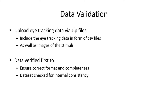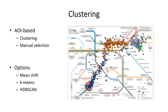Our tool supports the upload of eye-tracking data via ZIP files which contain two components: the recorded eye movement data as well as the stimuli in the form of static images. The data is first checked for correct format, completeness, and internal consistency by comparing it with the tool-specific data template. We support several kinds of clusterings, taking into account areas of interest that can be manually selected, as well as further options like mean shift, k-means, or a hierarchical density-based variant called HDBScan. The number of clustering approaches can easily be extended and integrated into the tool by users.